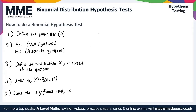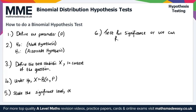We're nearly there — two more steps to go. For step six, the penultimate step, we want to test for significance or find the critical region.